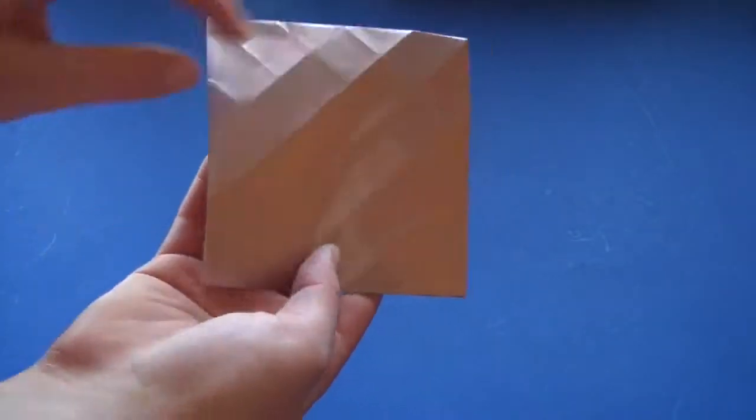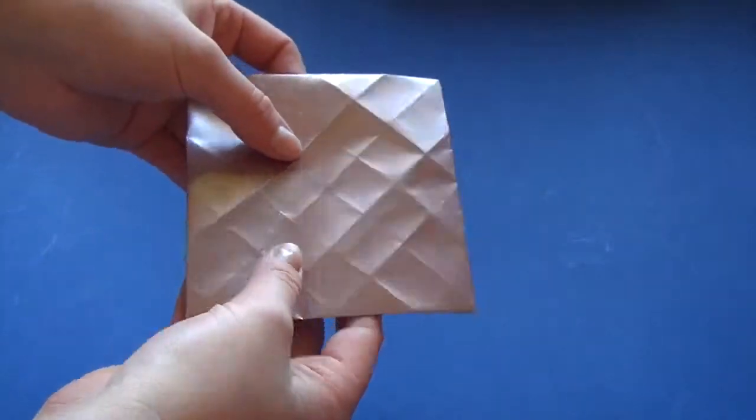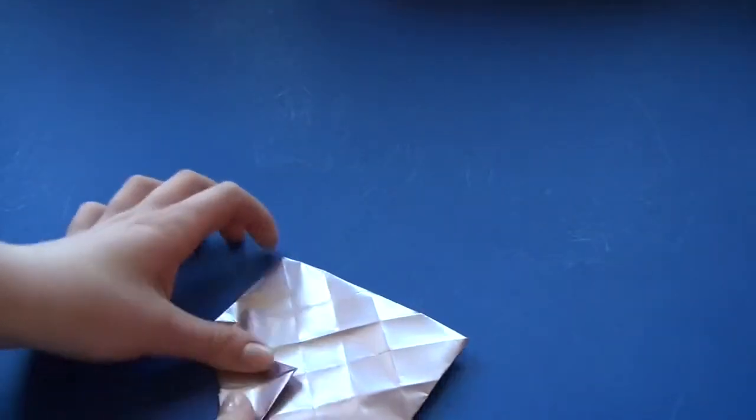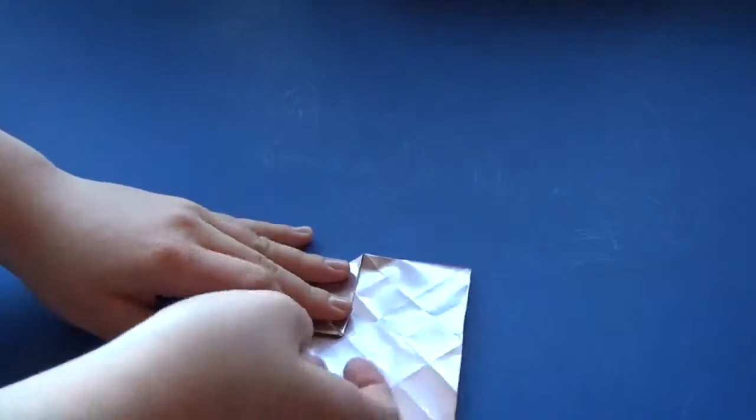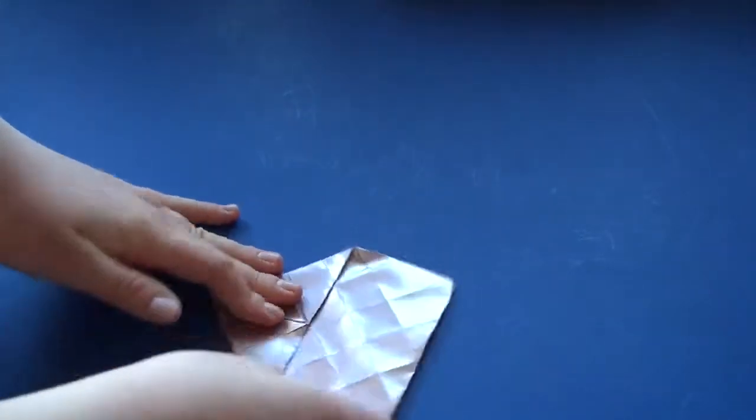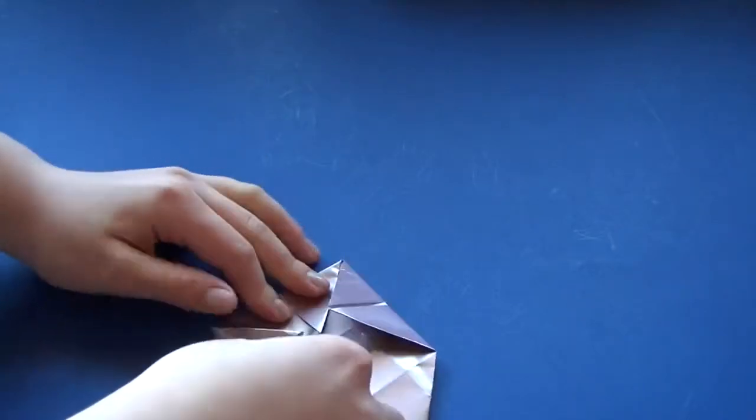And there should be a whole bunch of little squares here. And take your corners and bend them into the middle. Make really good creases as well. So like this.